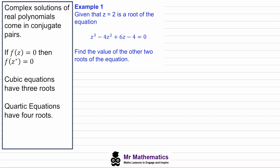In example one we're given that z equals two is a root of a cubic equation. This is a real root and we've been asked to find the other two roots. If we define f(z) equals z cubed minus four z squared plus six z minus four, then we know that f(2) equals zero.